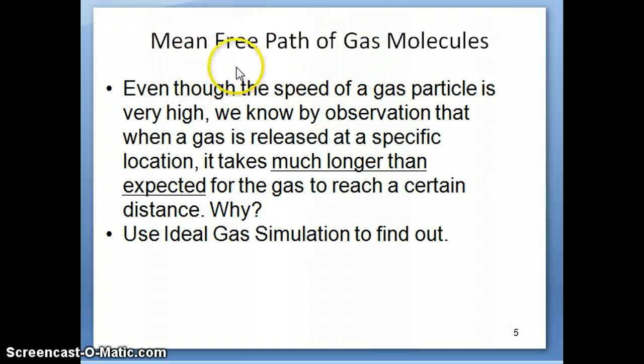In the previous videos we discussed that we can calculate the speed, the average speed, or the root mean square speed of a gas particle, and we find that those speeds tend to be really high. We calculated the speed at zero degrees Celsius and we found them to be on the order of about 1500 miles per hour or about 500 meters per second.